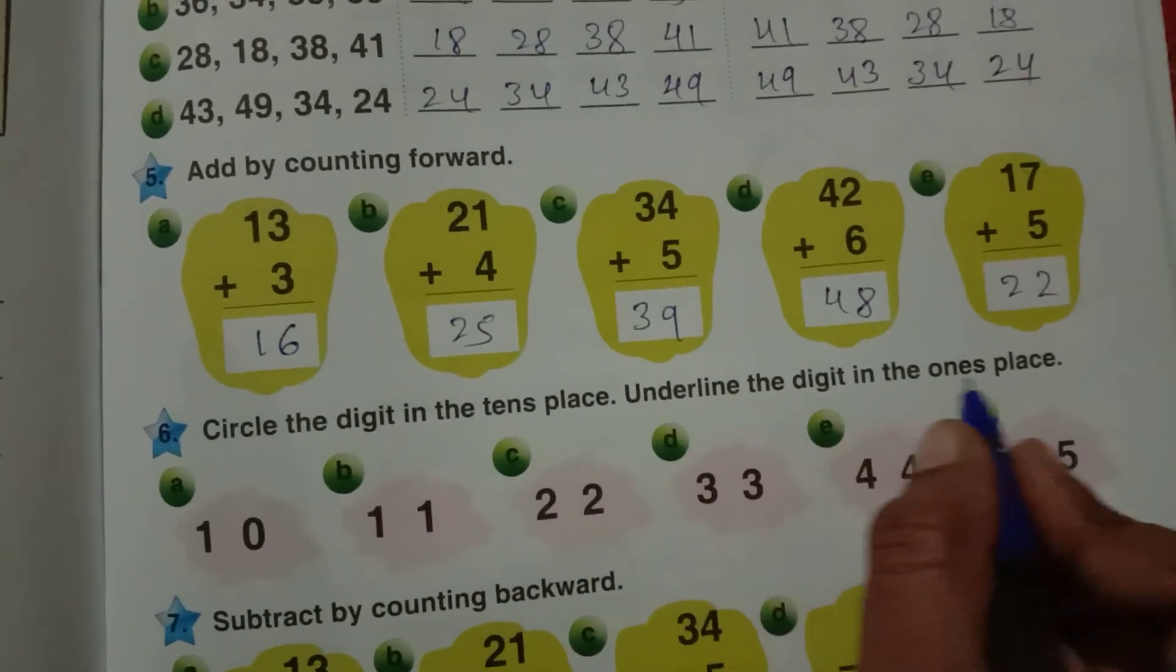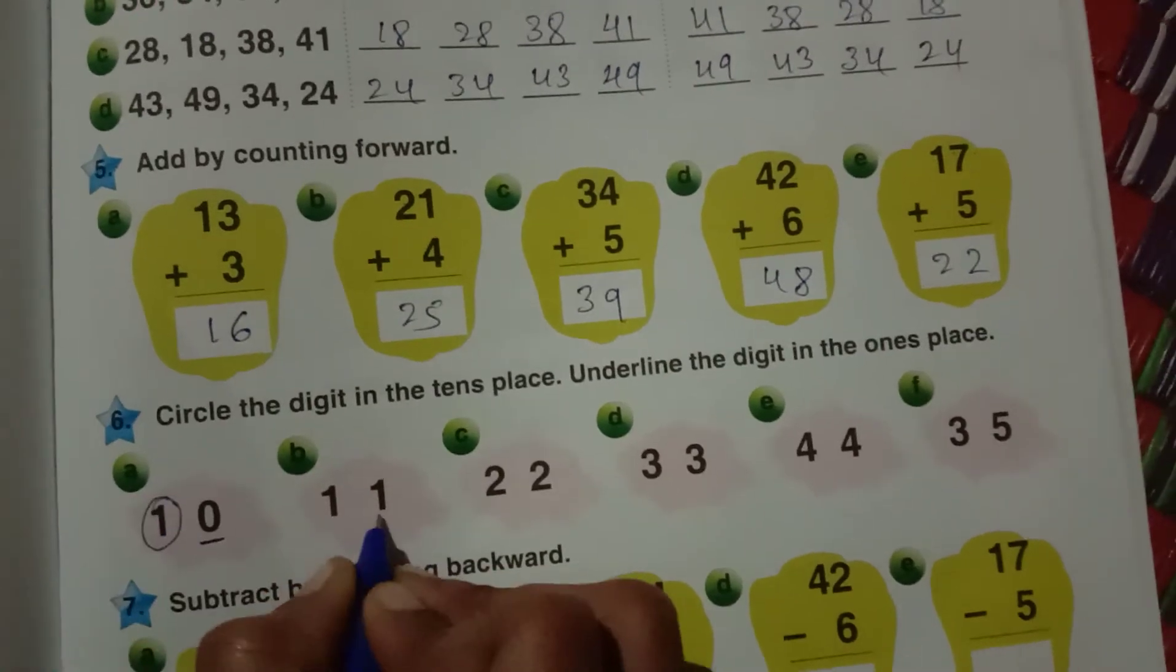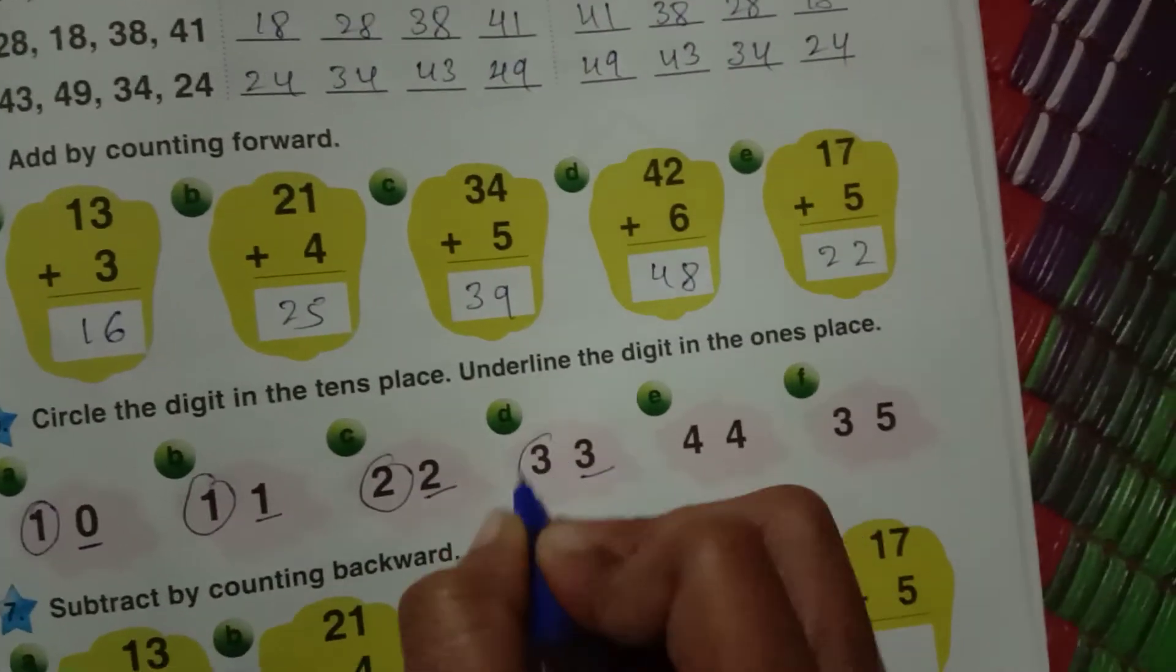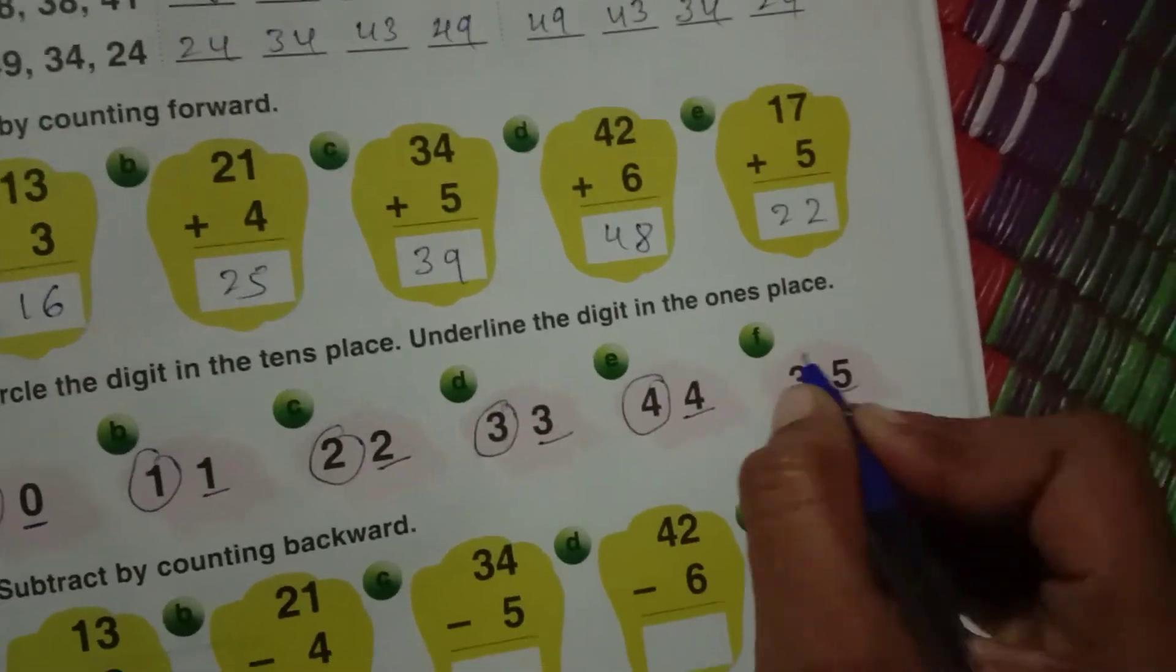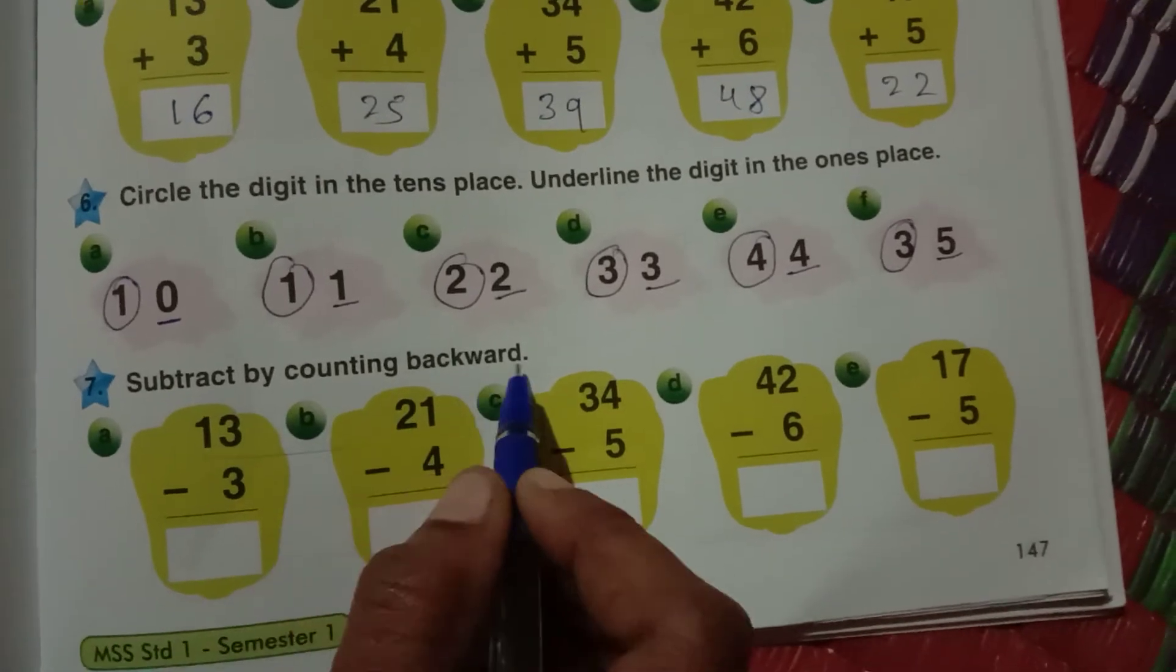This is ones place, this is tens place. 10, 11, 22, 33, 44. Ones place, tens place. Ones place, tens place. Okay, next.